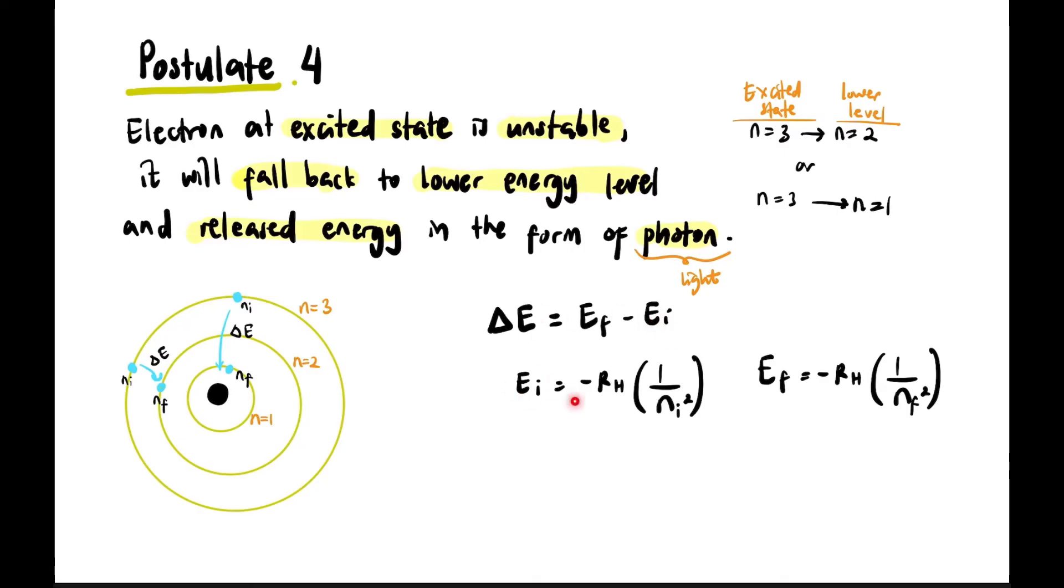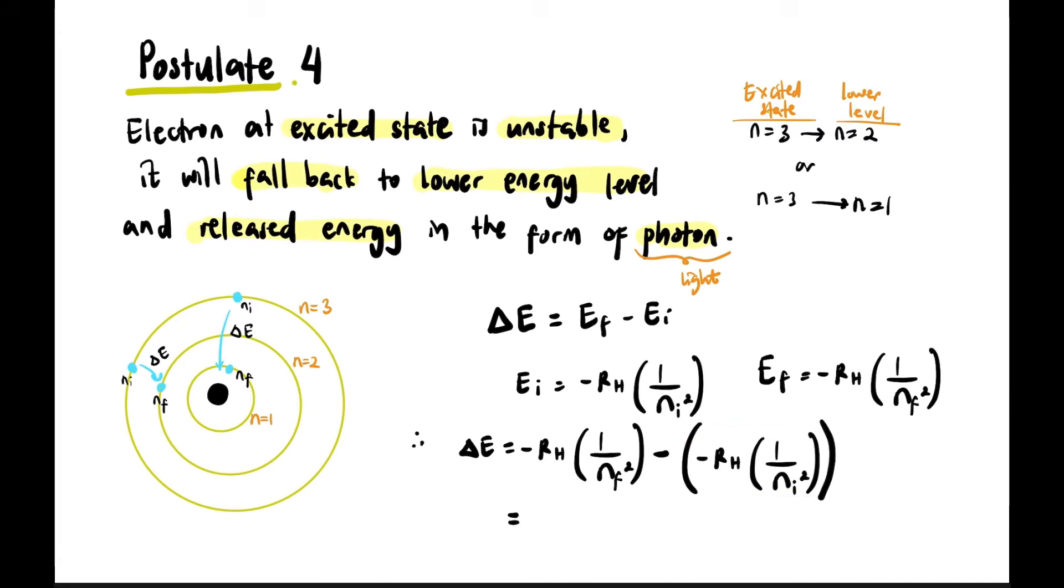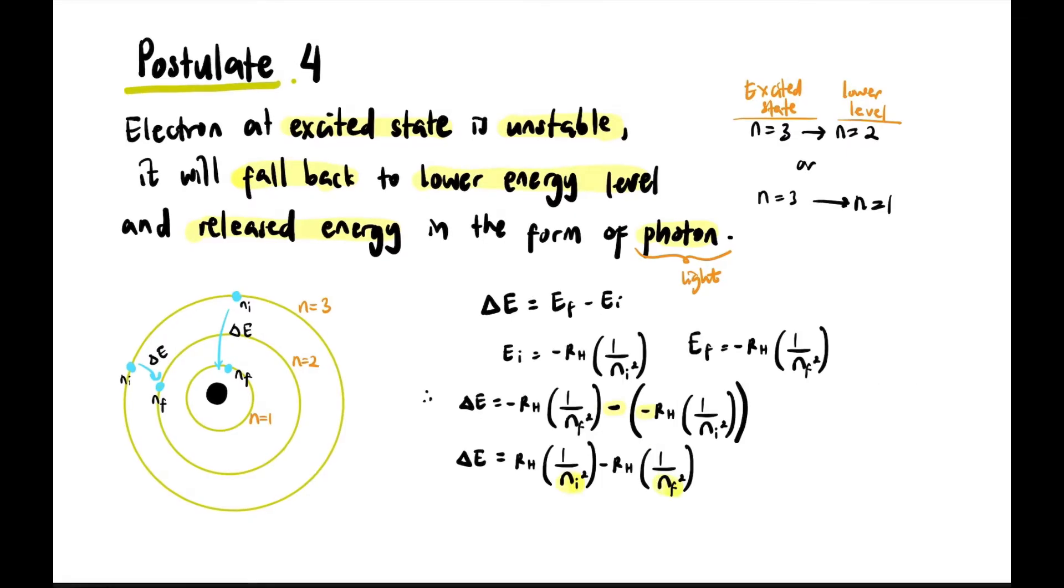Delta E equals final minus initial. We take the formula for E final and substitute: negative RH one over nf squared, that's the energy at the final level, minus negative RH one over n initial squared, the energy at the initial level. After we subtract and simplify, because negative minus negative becomes positive, we get delta E equals to RH in brackets one over n initial squared minus one over n final squared. This is the formula you need to know.